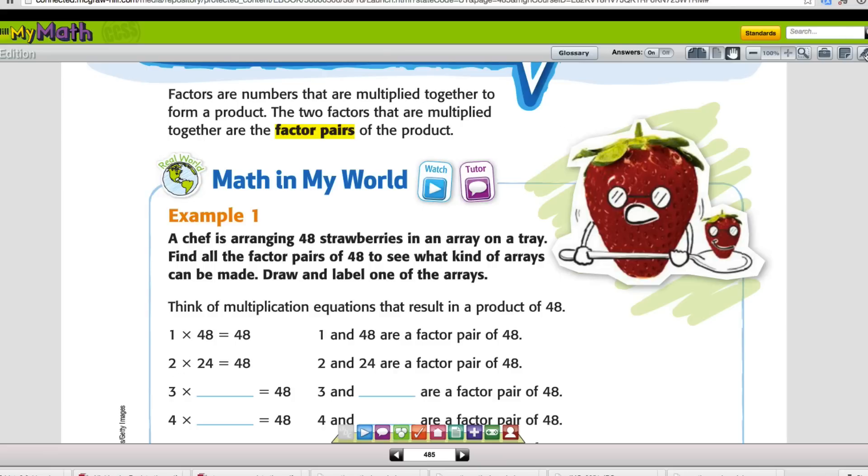Let's read the problem here so that we can know what we're supposed to be working on. It says a chef is arranging 48 strawberries in an array on a tray. Find all of the factor pairs of 48 to see what kind of arrays can be made. Draw and label one of the arrays.